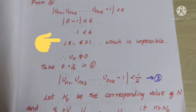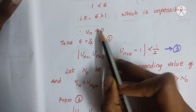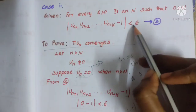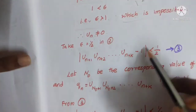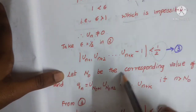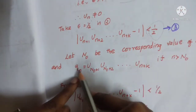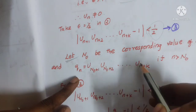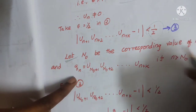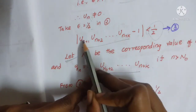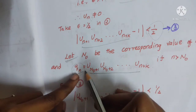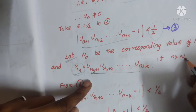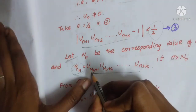Therefore Un is not equal to 0. Take epsilon equal to 1/2. Let N0 be the corresponding value of N, and let Qn equal U(N0+1) · U(N0+2) · ... · U(N0+k) for n greater than N0.